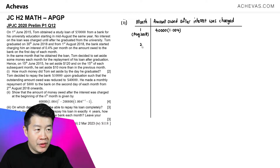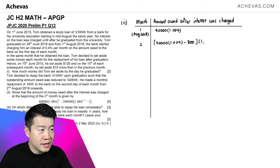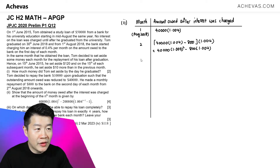For the second month: in the previous month Tom paid back $800, and on the 1st day of the second month the bank continues to charge interest of 0.4%, so we multiply by 1.004. This gives us $40,000 times 1.004 squared, minus $800 multiplied by 1.004. Let's continue to the third month — that is September.